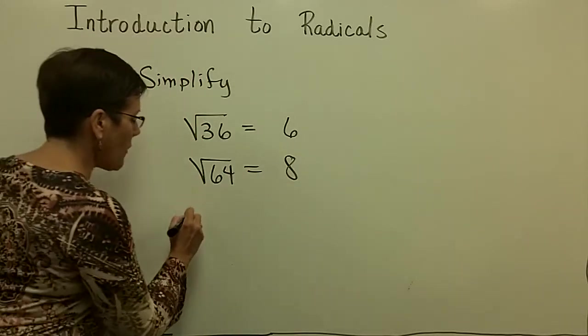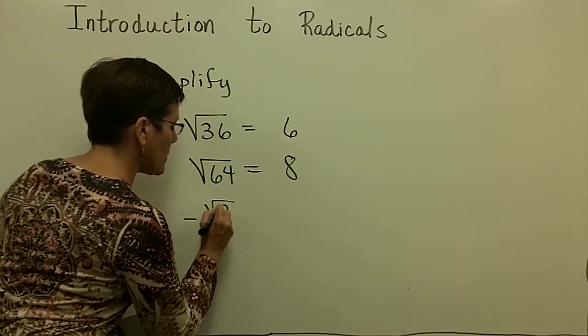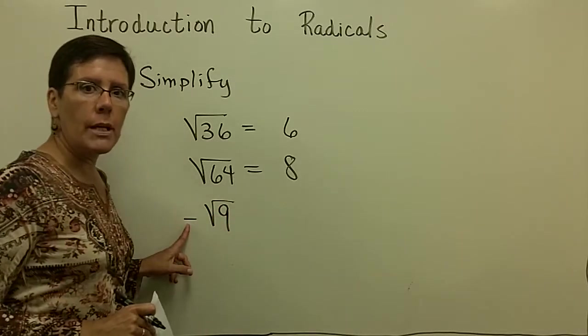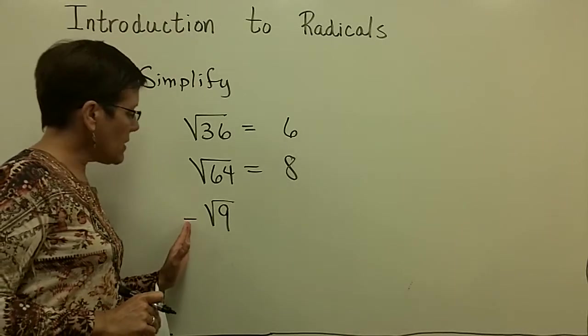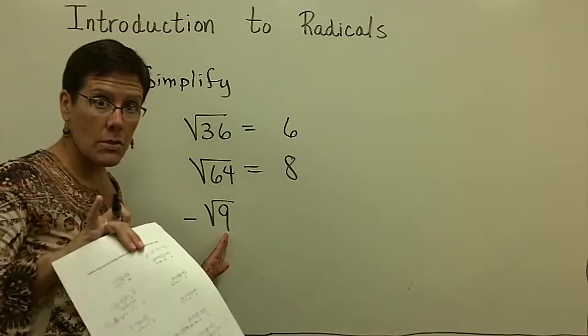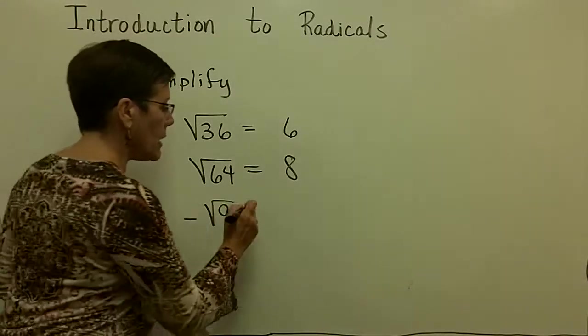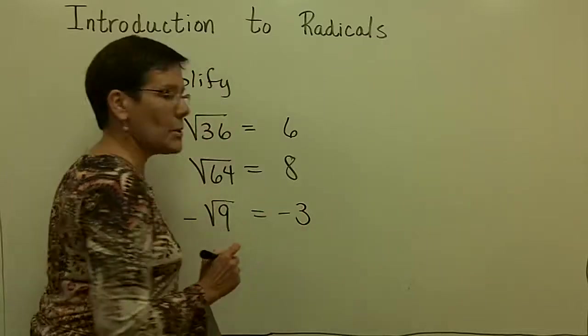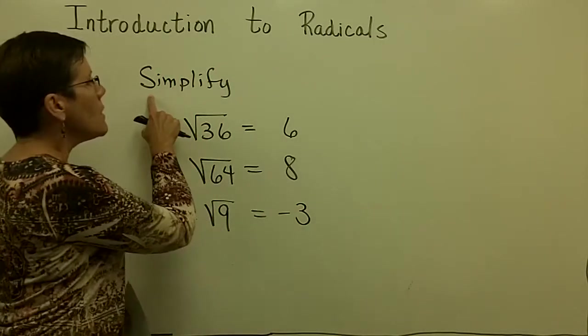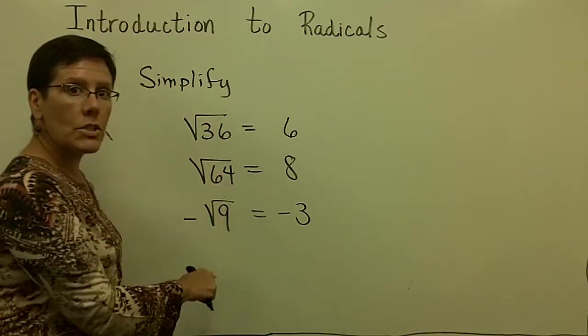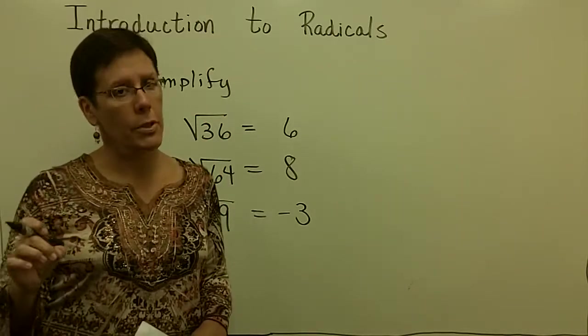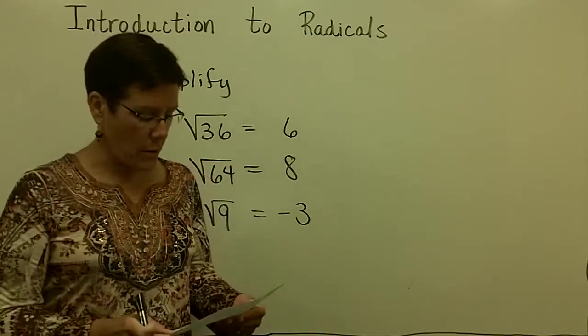However, if I ask you to simplify this expression right here, this is asking you to give me the opposite of whatever the principal square root of 9 is. Well, that's 3, and the opposite of 3 is negative 3. So be very careful with the two directions that I just have explained here. This one says simplify these expressions, and the previous one said give me the square roots, plural, plus and minus, for each of those values.